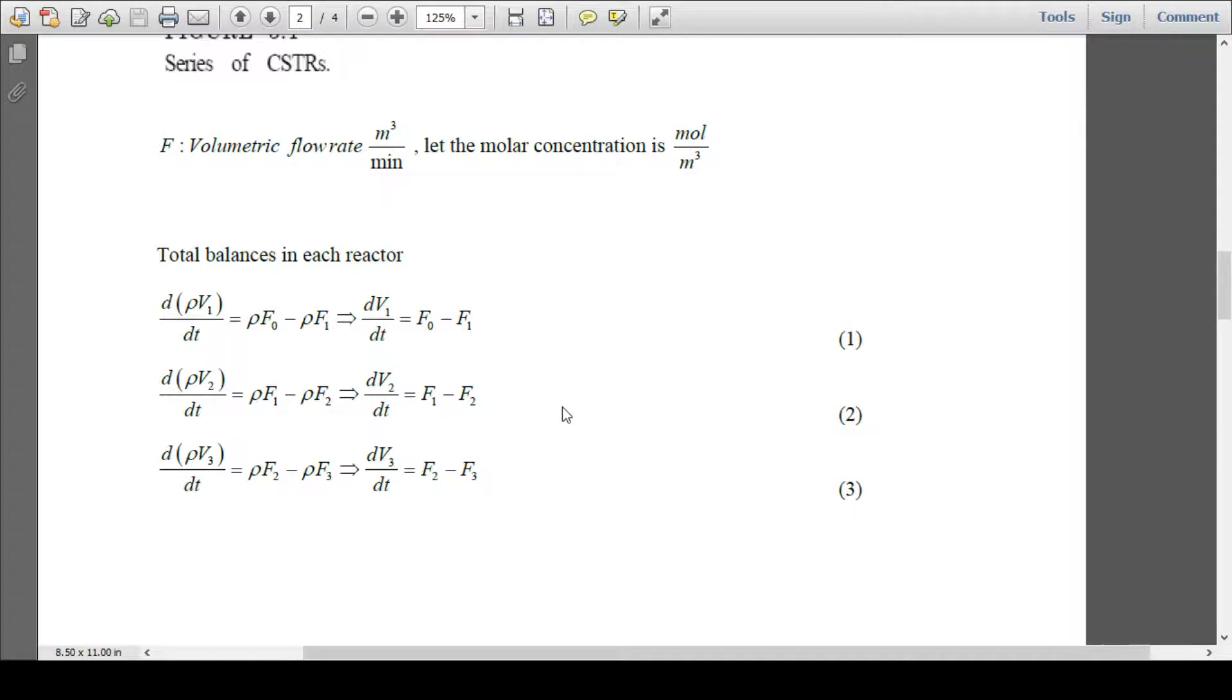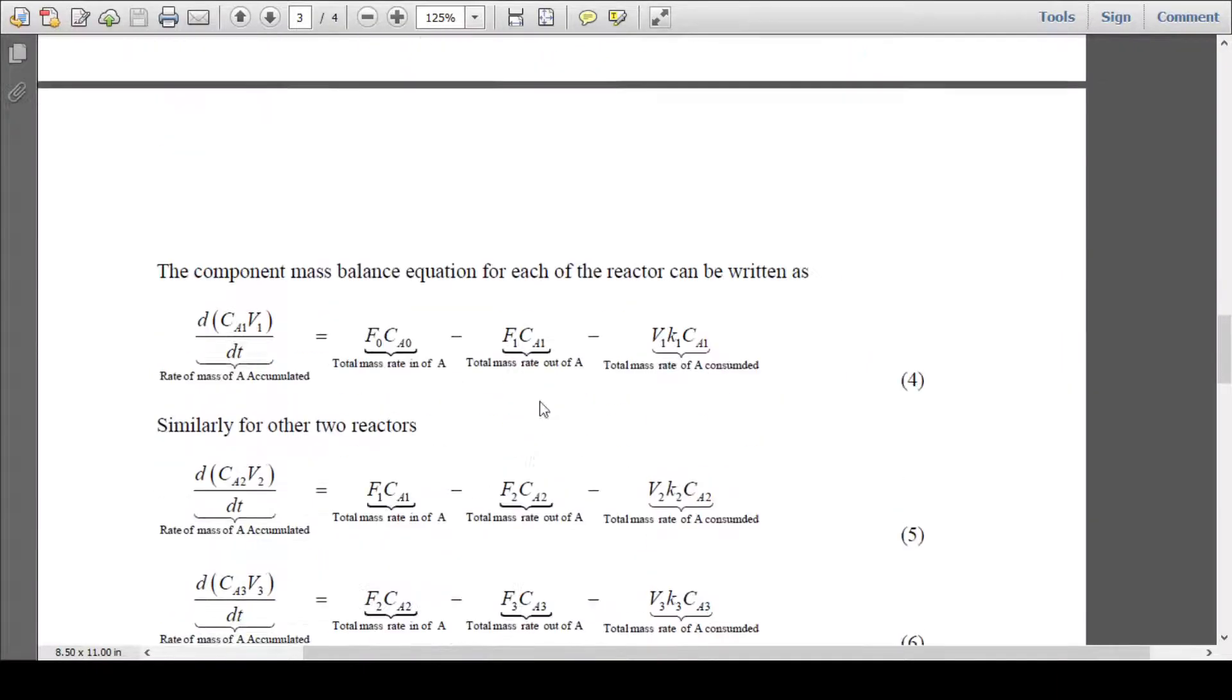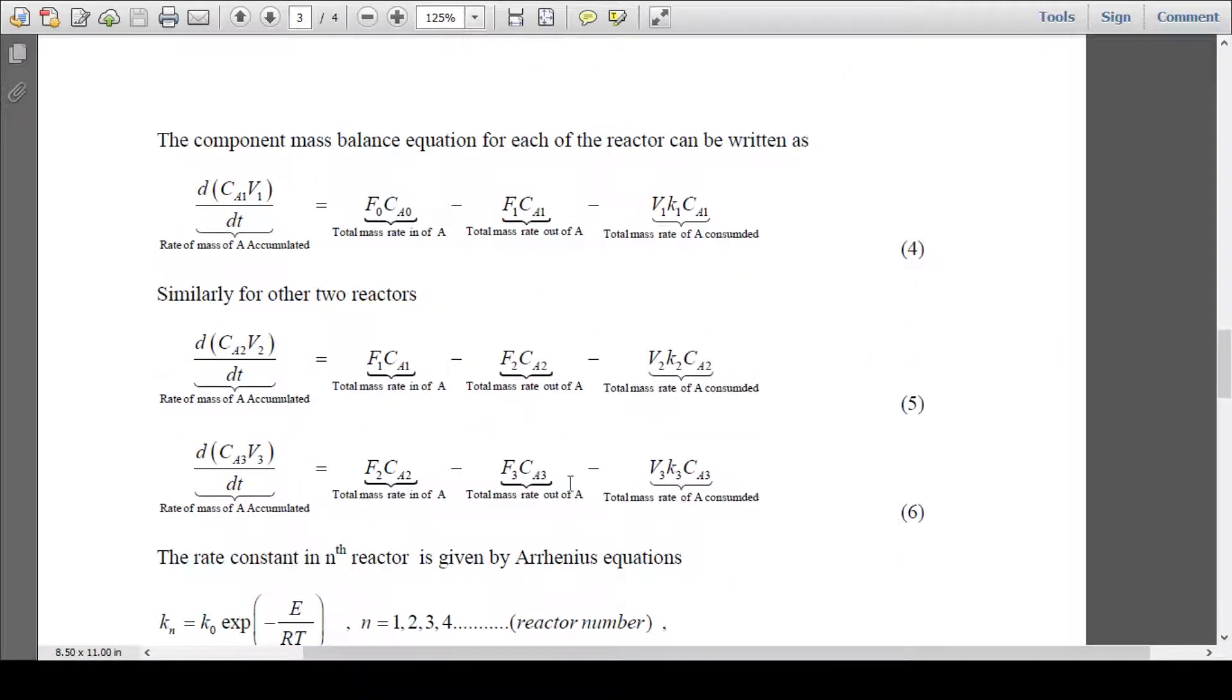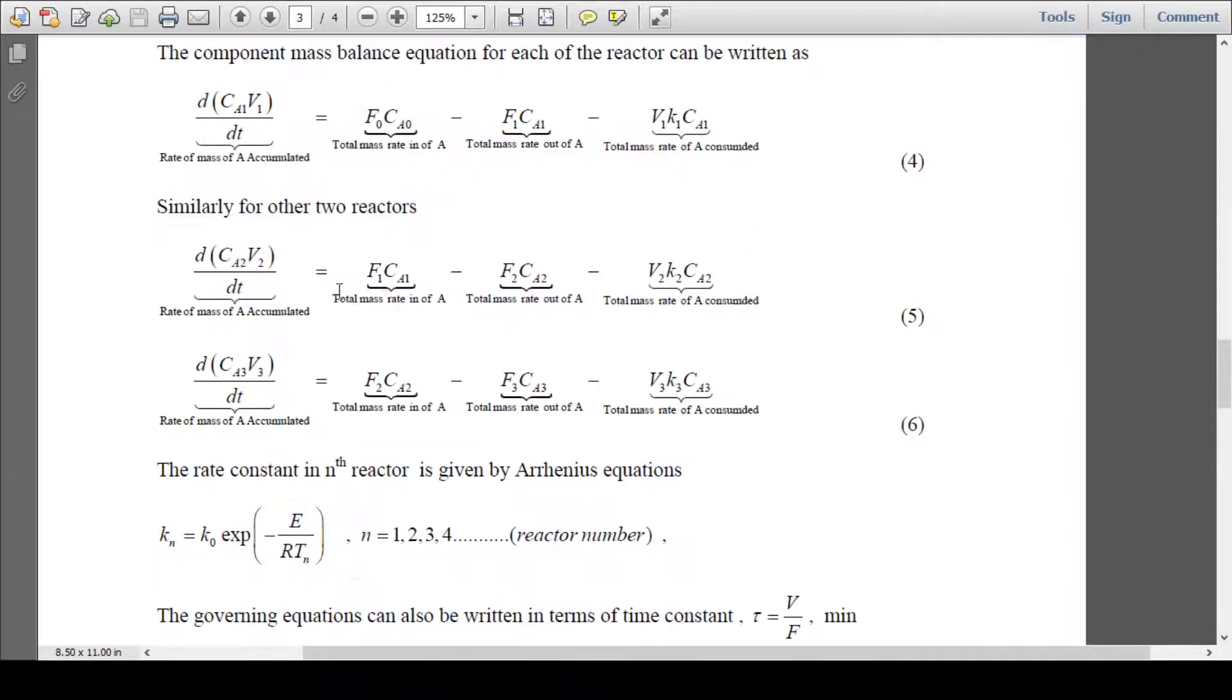Now we can write component balance for each of the reactors. For reactor 1, rate of accumulation of component A inside the reactor is d(Ca1·V1)/dt. Rate of A coming in is F0·Ca0, going out is F1·Ca1, and consumed is V1·K1·Ca1.